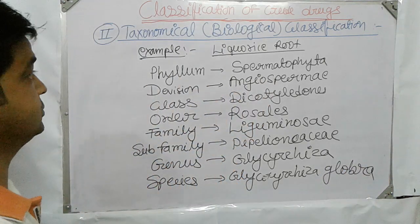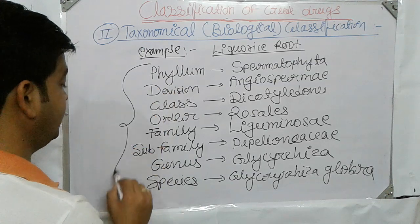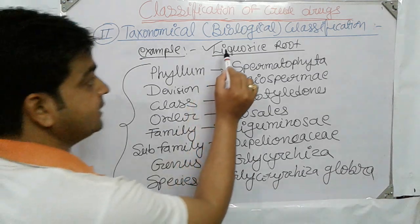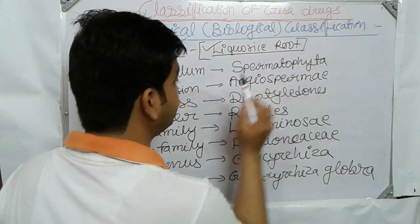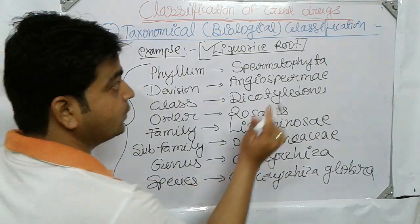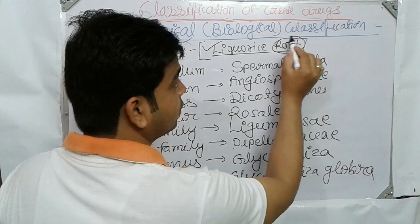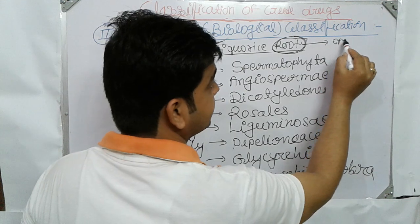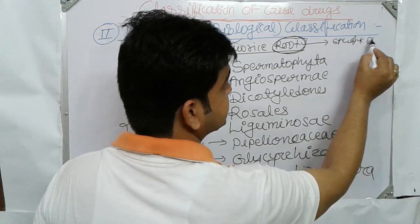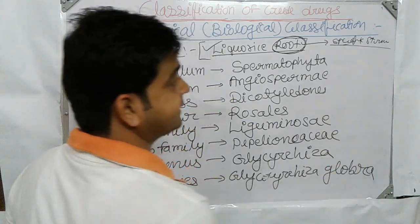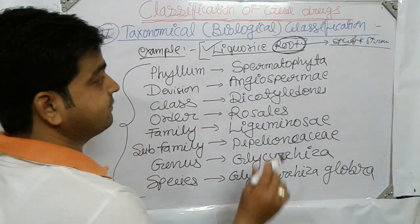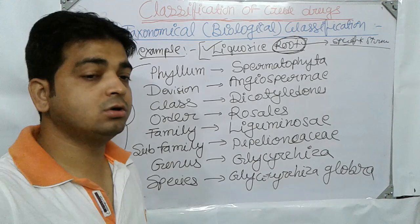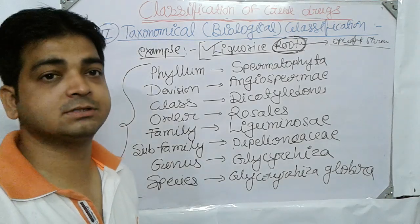This is the taxonomical detail of Liquorice root. With only this taxonomical data, we cannot come to know whether the drug is organized or unorganized. If we know it is a root, it will have a specific structure and we can study its histological characteristics under a microscope — but the taxonomical classification alone does not tell us whether it is an organized or unorganized drug. This is the drawback of taxonomical classification.